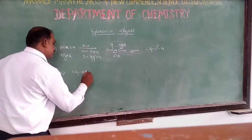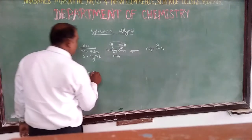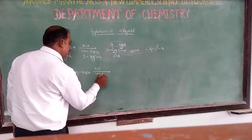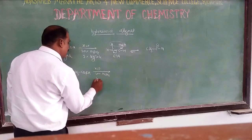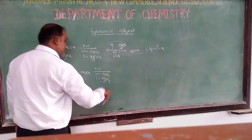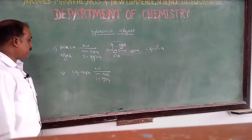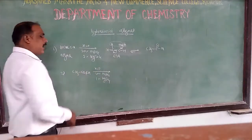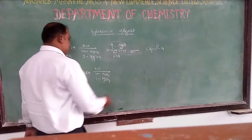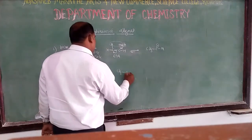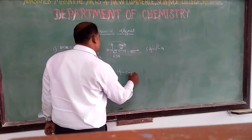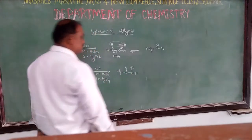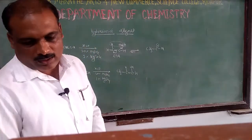Similarly, one more example: this is propyne. Propyne is treated under the same hydration conditions — 20% sulfuric acid and 1% mercuric sulfate. Water molecules add across the triple bond, giving an intermediate product with the structure CH₃-C(=C)-OH.